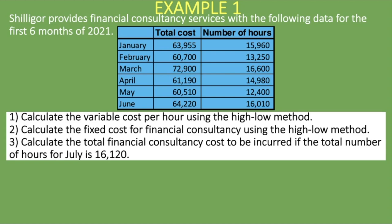We're told that Shiligo provides financial consultancy services, and we're given the following data for the first six months of 2021: January, February, March, April, May, and June — with the total cost and the number of hours for each month. The activity here is the number of hours. The three requirements are: one, calculate the variable cost per hour using the high-low method; two, calculate the fixed cost for financial consultancy using the high-low method; and three, calculate the total financial consultancy cost if the total number of hours for July is 16,120.